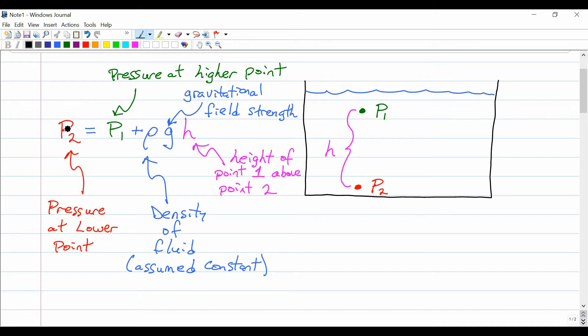The pressure at a lower point, think of it deep down, that's equal to the pressure at a point above that point, so a higher point. And you have to add more. This makes sense. The pressure lower is equal to the pressure higher and some extra amount. And that extra amount depends on three factors. The density of the fluid, whether we're talking about water or air or oil. We are assuming it's constant, by the way.